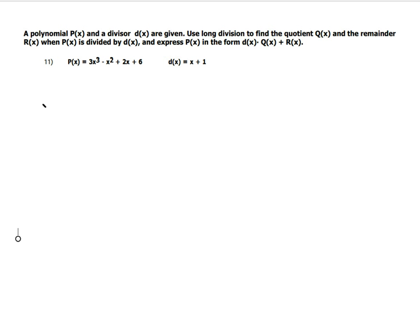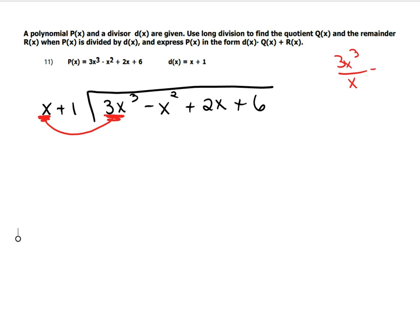Okay, so we're going to take the x plus 1 and we're going to divide it into the 3x³ minus x² plus 2x plus 6. Nothing was missing. Remember, if the x² had been missing, I would have had to put a plus 0x² in there. So you're going to start by taking the x and dividing it into the 3x³. And 3x³ divided by x would be 3x² because this x cancels out one of those and leaves you with 2. So you're going to put that 3x² right there.